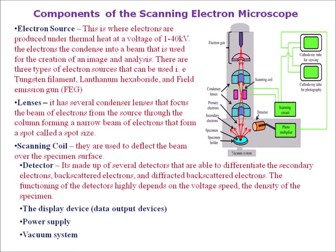Here we can see the components or parts of a scanning electron microscope. The electron source is there. In a light microscope we use a light beam, but here it is an electron source — tungsten filament, lanthanum hexaboride, and field emission gun. The lenses consist of several condenser lenses that focus the beam of electrons from the source through the column, forming a narrow beam of electrons that form a spot called a spot size.